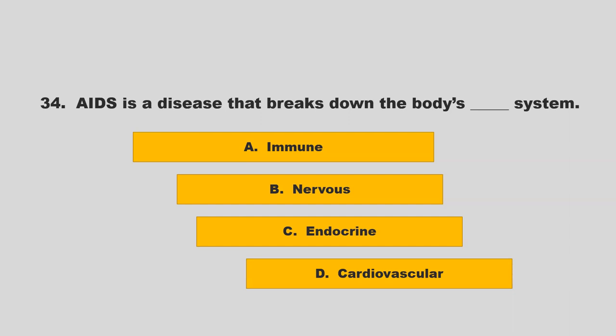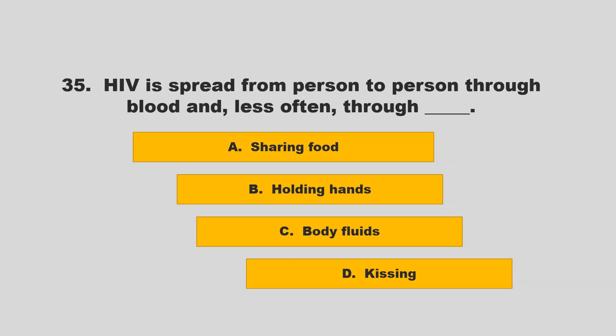AIDS is a disease that breaks down the body's blank system. Options: immune, nervous, endocrine, or cardiovascular. The correct answer is A: immune.